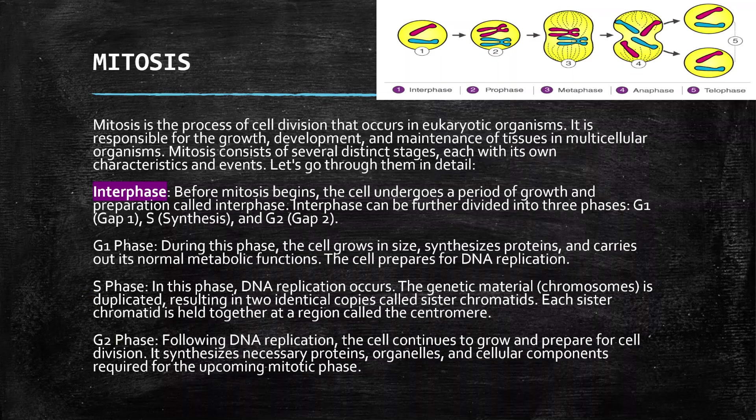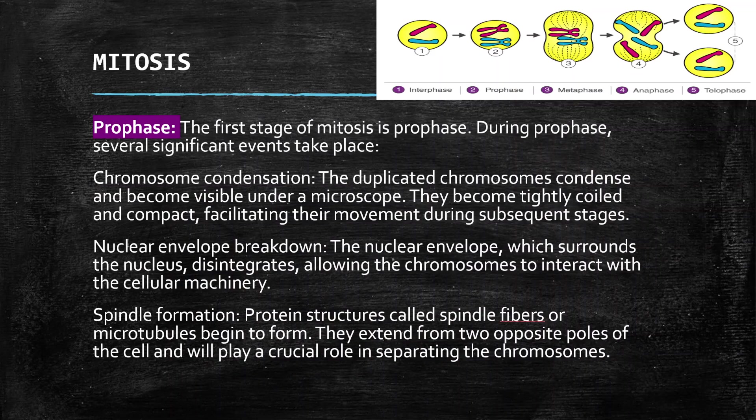Next we have prophase — this is the first stage of mitosis. During prophase, several significant changes take place. First, chromosome condensation occurs: the duplicated chromosomes condense and become visible under a microscope. They become tightly coiled and compact, facilitating their movement during subsequent stages.